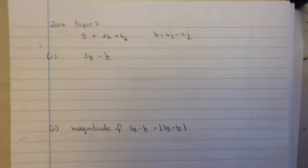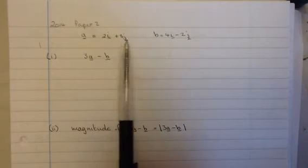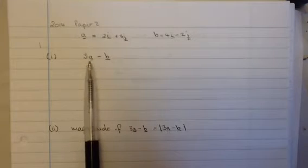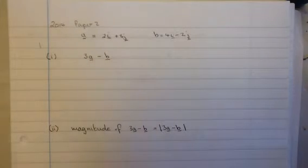Okay, so in this first question we're given two vectors a and b and we're asked to write down what is 3a minus b.